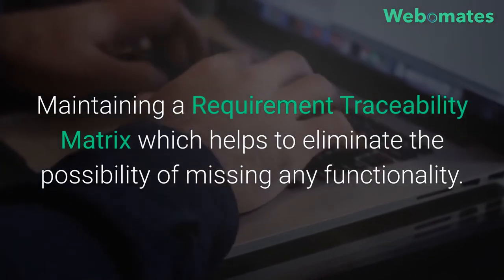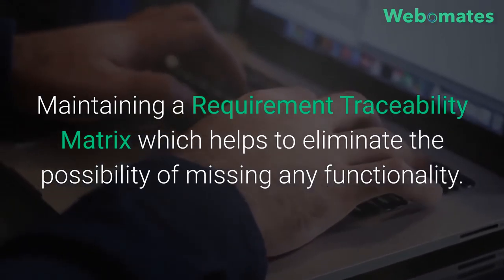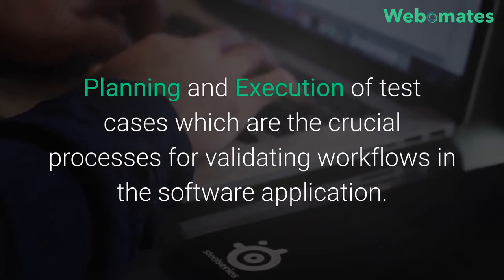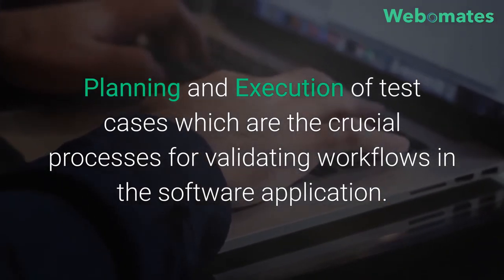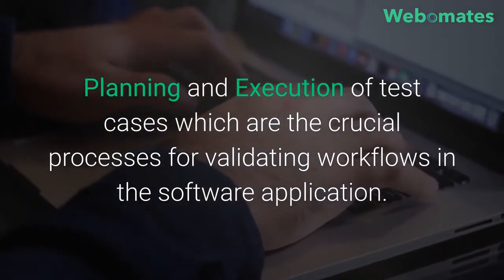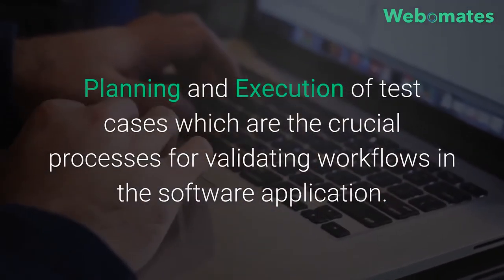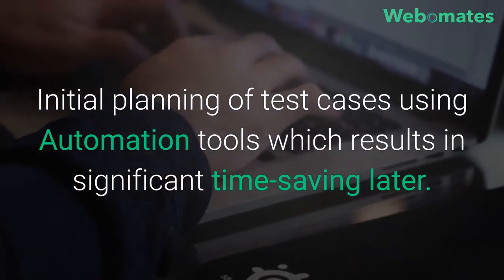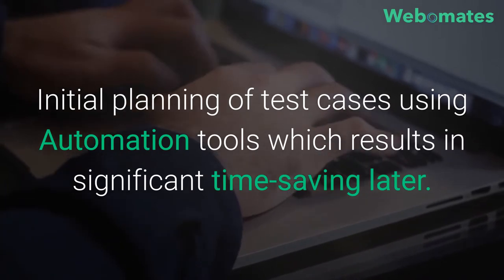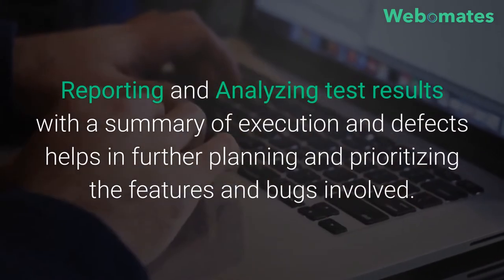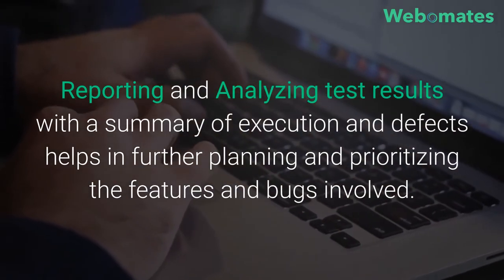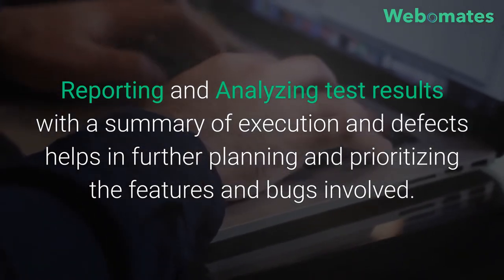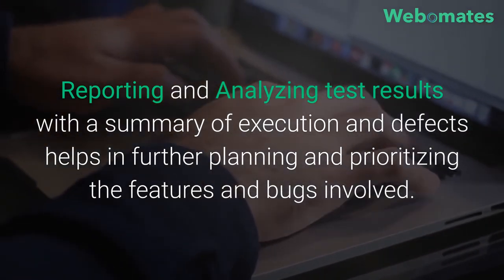Best practices to correctly achieve functional testing include: maintaining a requirement traceability matrix, which helps to eliminate the possibility of missing any functionality; planning and execution of test cases, which are crucial processes for validating workflows; initial planning of test cases using automation tools, which results in significant time saving; and reporting and analyzing test results with a summary of execution and defects to help in further planning and prioritizing the features and bugs involved.